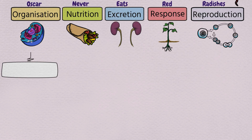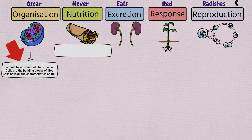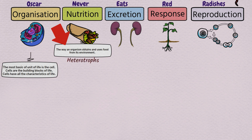Organisation: the most basic unit of life is the cell. Cells are the building blocks of life and have all the characteristics of life. Nutrition refers to the way in which an organism obtains and uses food from its environment. There can be heterotrophs — organisms that cannot make their own food — and autotrophs — organisms that can make their own food.